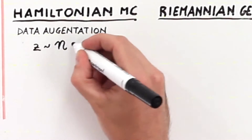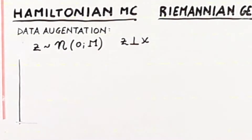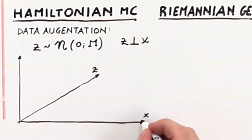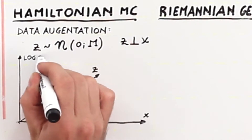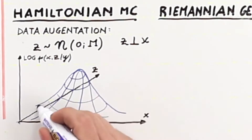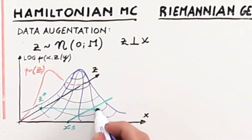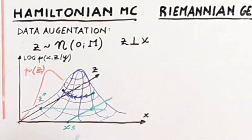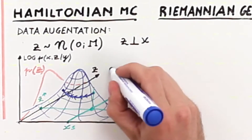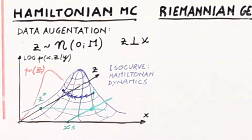The hybrid Monte Carlo technique consists in introducing an auxiliary variable C of the same dimensionality as X, independent from X, and normally distributed with covariance M, also denominated the mass matrix. A new sample is obtained by sampling from the auxiliary variable C and moving along the isocurve of the joint probability distribution of X and Z by integrating the Hamiltonian equations.